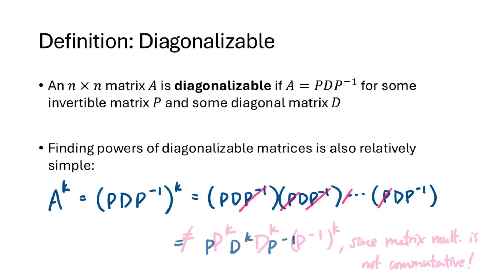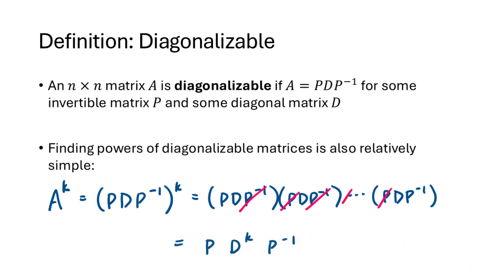Instead, we realize that every time we have a P inverse and a P next to each other, those cancel out. We get a P at the start with no P inverse to cancel, a P inverse at the end with no P to cancel, and K copies of D in the middle — which works out to be P times D to the K times P inverse. Since D is diagonal, D to the K is easy to compute, so A to the K is also relatively easy to compute.